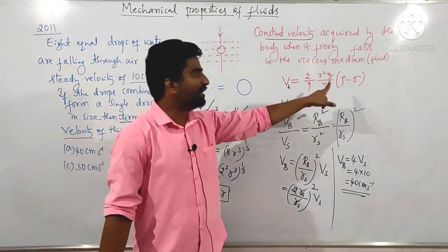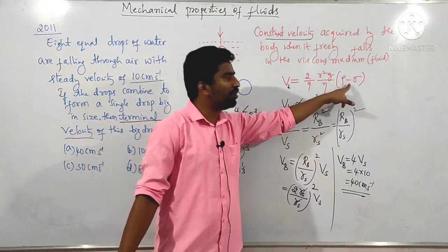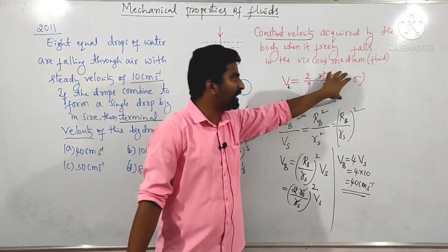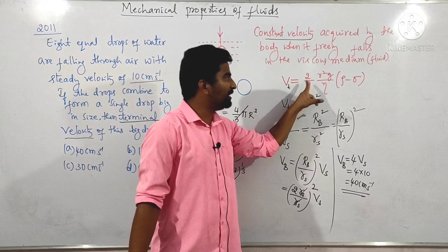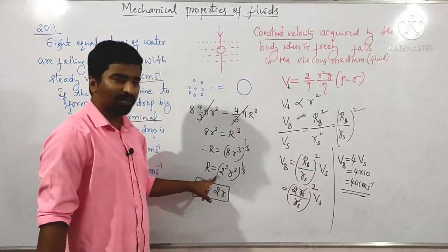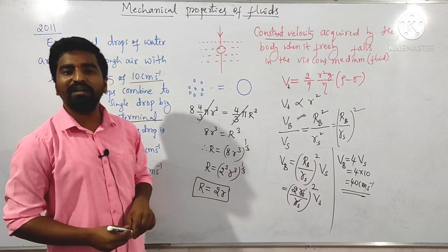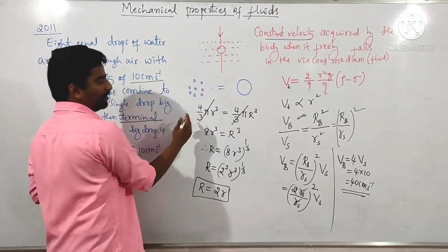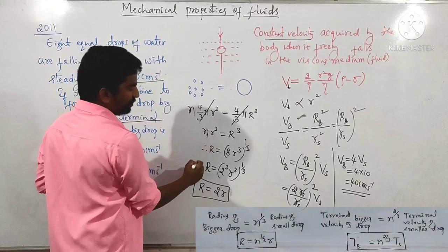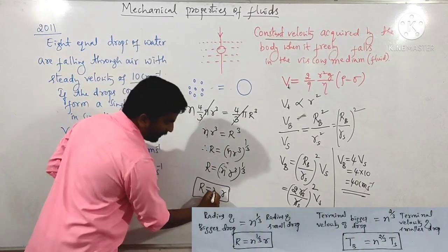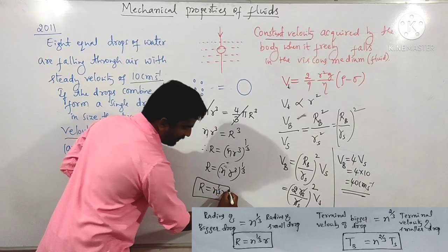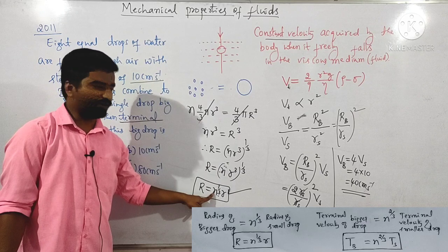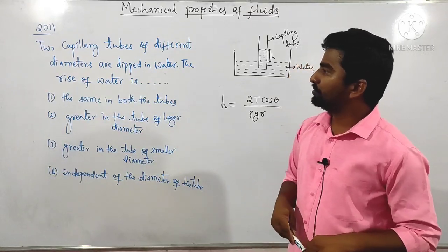This is the concept regarding terminal velocity. The formula constants g, η, ρ, and σ are all eliminated in the ratio, and only the radii differ. In general, if there are n drops, the radius of the bigger drop is n^(1/3) times the radius of each smaller drop.